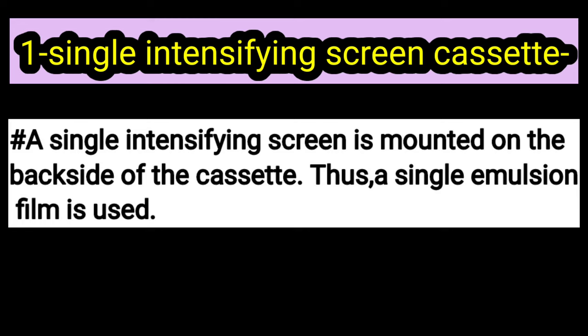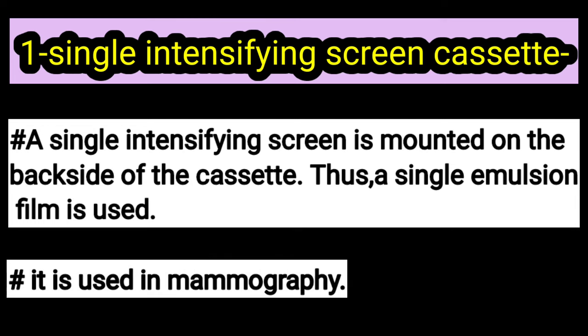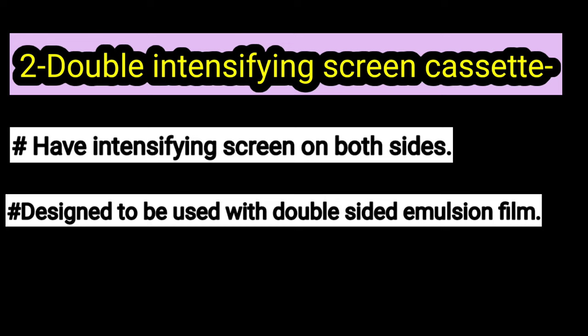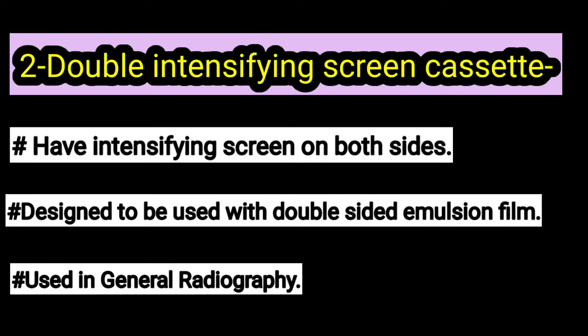Number one is the single intensifying screen cassette. It has a single intensifying screen which is mounted on the back side of the cassette, and it uses a single-sided emulsion film. It is used mainly in mammography.